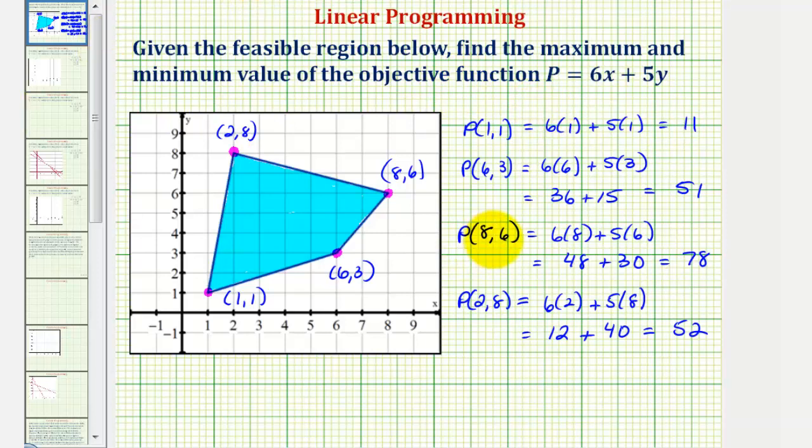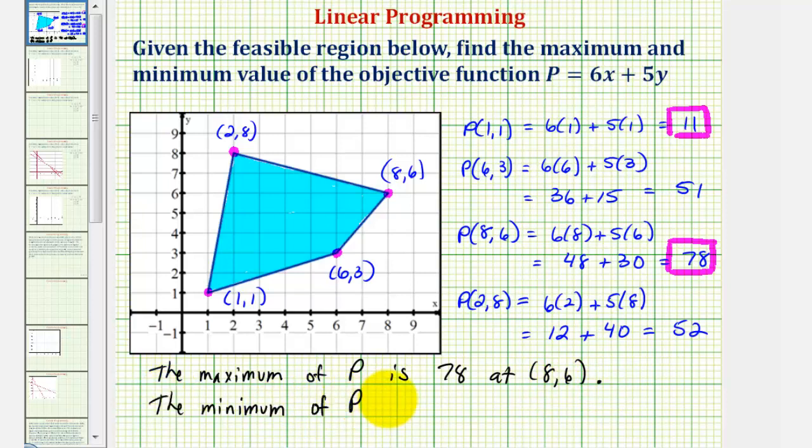Notice how we have a maximum of 78 at the point (8, 6), or when x equals 8 and y equals 6, and we have a minimum of 11 at the point (1, 1), or when x equals 1 and y equals 1. Let's go ahead and write this out. The maximum of P is 78 at (8, 6), and remember these are the maximum values of P under the constraints which gave us this feasible region.